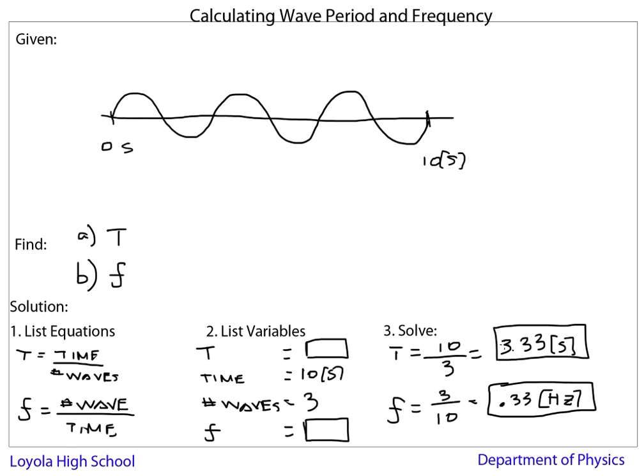So let's take a look at this and see if it makes some sense. So the period, capital T, is 3.33 seconds. That's the number of time per wave. If I have 10 seconds, and I have three waves, each one of these waves would take about 3.33 seconds. And if you add it all up, that's about 10 seconds. So that's the time per wave or the period.